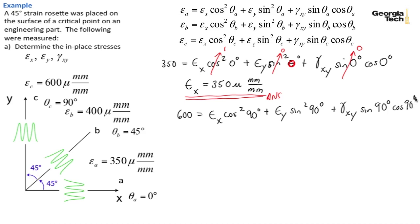And with that, we know that cosine squared of 90 degrees is 0. Even though epsilon_x has a value, that term zeros out. Sine of 90 degrees is 1, so that squared is 1. And again, cosine of 90 degrees is 0, so this term zeros out. And we end up with now epsilon_y equals 600 micro millimeters per millimeter. And that's our normal strain in the y direction in plane.